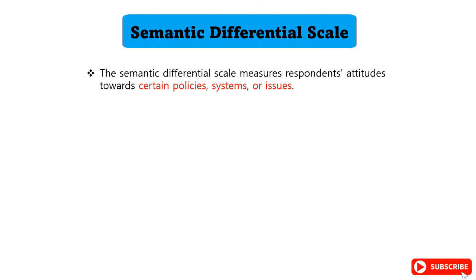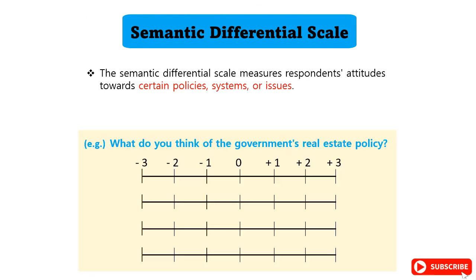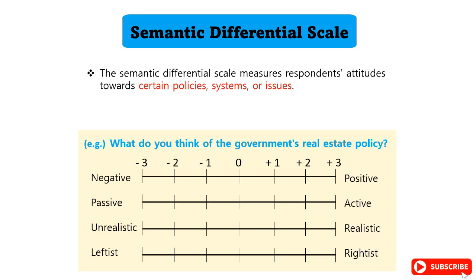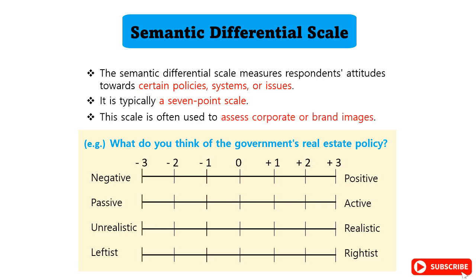The Semantic Differential Scale measures respondents' attitudes towards certain policies, systems, or issues. For example, in a survey asking about respondents' thoughts on government real estate policies, the scale presents opposing adjectives such as negative-positive, passive-active, unrealistic-realistic, or leftist-rightist at the ends of the response options. It is typically a seven-point scale, often used to assess corporate or brand images.